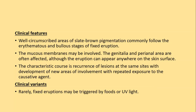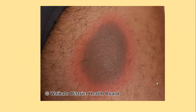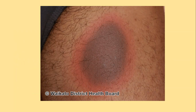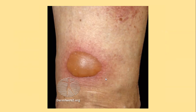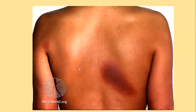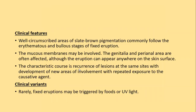Clinically, fixed drug eruption presents as a well-circumscribed area of slate blue-brown pigmentation, usually following erythematous and bullous stages. Initially there is a hyperpigmented zone surrounded by a rim of erythema; lesions can be single or multiple. Soon after, a blister appears within the rim, and once it heals it leaves a patch of hyperpigmentation. Mucous membranes, genitalia, and perioral areas may also be affected.